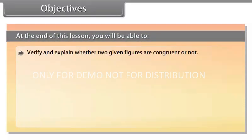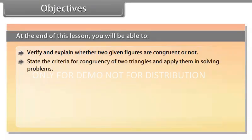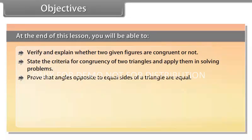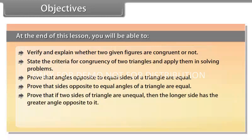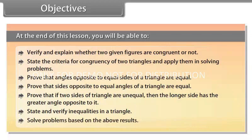Objectives. At the end of this lesson, you will be able to: verify and explain whether two given figures are congruent or not; state the criteria for congruency of two triangles and apply them in solving problems; prove that angles opposite to equal sides of a triangle are equal; prove that sides opposite to equal angles of a triangle are equal; prove that if two sides of a triangle are unequal, then the longer side has the greater angle opposite to it; state and verify inequalities in a triangle, and solve problems based on the above results.